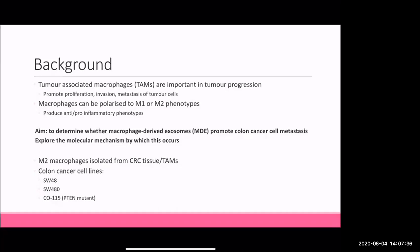The background of this paper is around tumour-associated macrophages, which are important in tumour progression. These are cells within the tumour microenvironment and they've been shown to promote proliferation, invasion, and metastasis of tumour cells. Macrophages can be polarised into M1 or M2 phenotypes based on their anti- and pro-inflammatory cytokines. This is not very well characterised - you don't necessarily have all of one phenotype, you can have a mix. The aim of this paper is to determine whether macrophage-derived exosomes promote colon cancer cell metastasis and to explore the molecular mechanism by which this occurs.